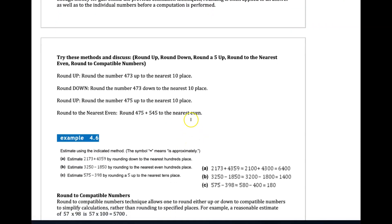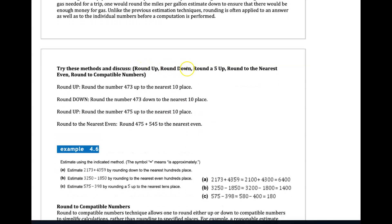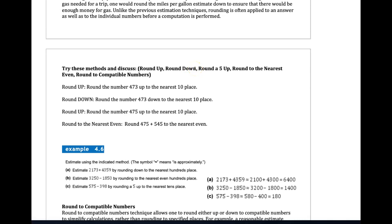Here are some methods to think about: rounding up, rounding down, round a 5 up, round to the nearest even, round to compatible numbers. All these terms mean something. It's not about memorizing the names but understanding the process. The purpose of rounding is just to estimate.